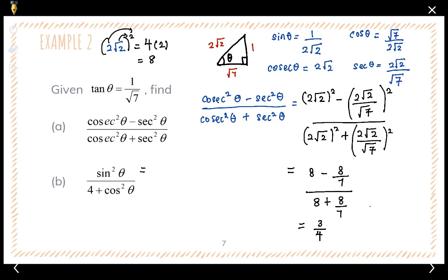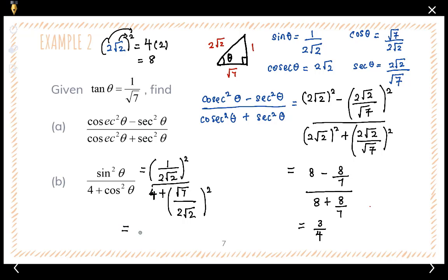Now let's look at part B. Sine theta is one over two square root of two, so sine squared theta equals one over eight. Using the calculated values, the expression evaluates to one over nine. I hope you can follow these two examples.